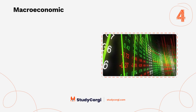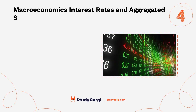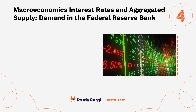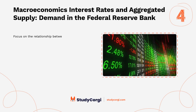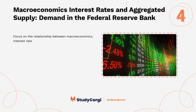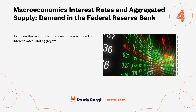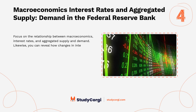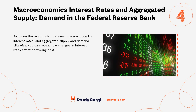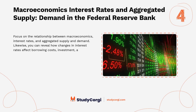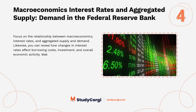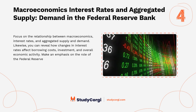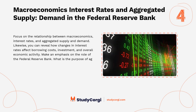Topic four: Macroeconomics, interest rates, and aggregate supply and demand in the Federal Reserve Bank. This topic focuses on the relationship between interest rates and aggregate supply and demand, revealing how changes in interest rates affect borrowing costs, investment, and overall economic activity. It also emphasizes the role of the Federal Reserve Bank and the purpose of aggregate supply and demand for macroeconomic stability.